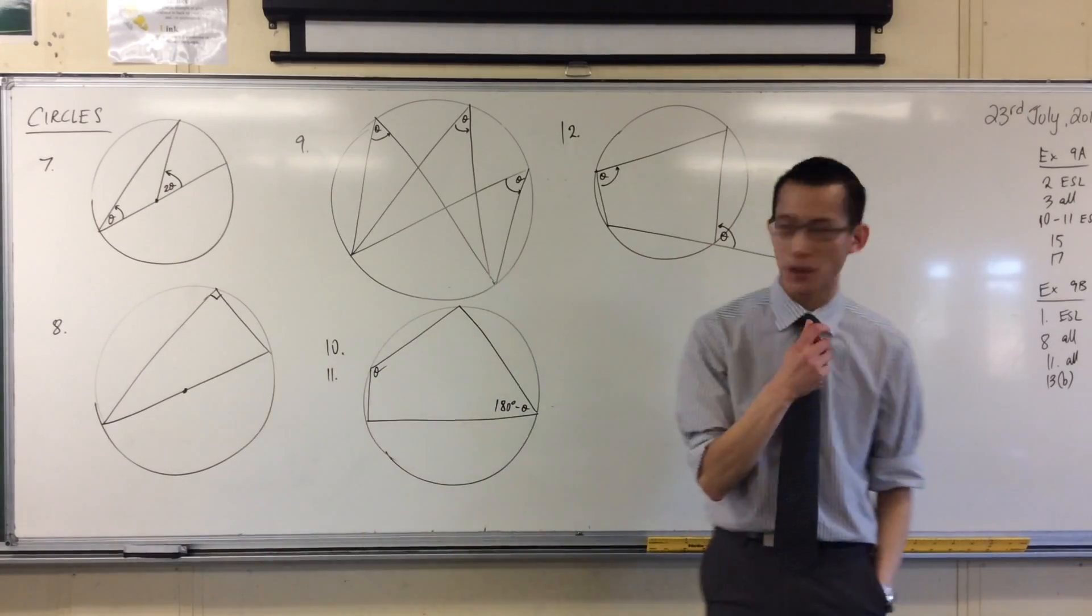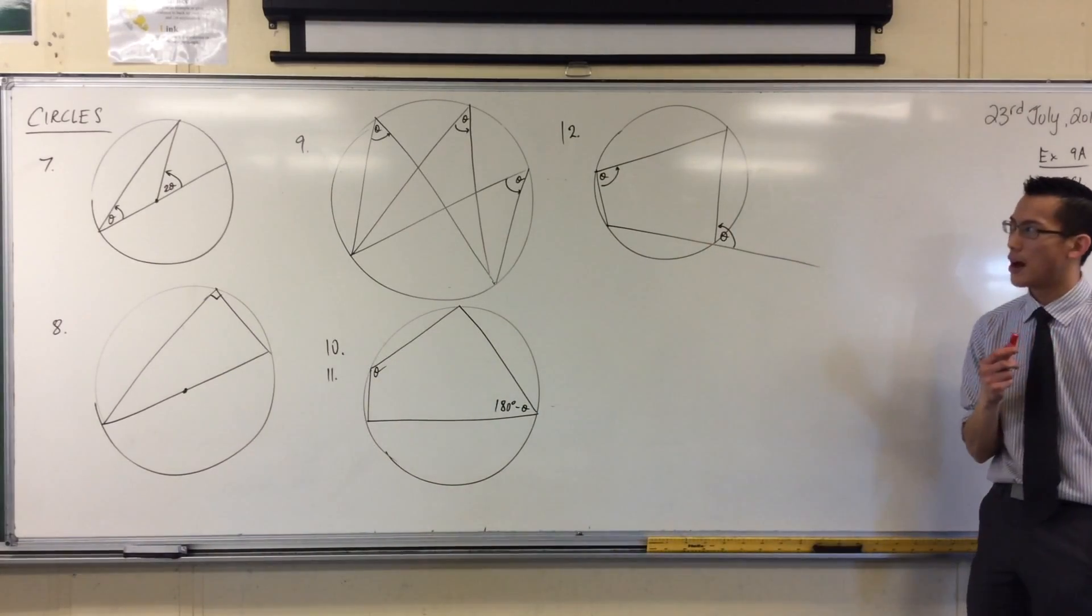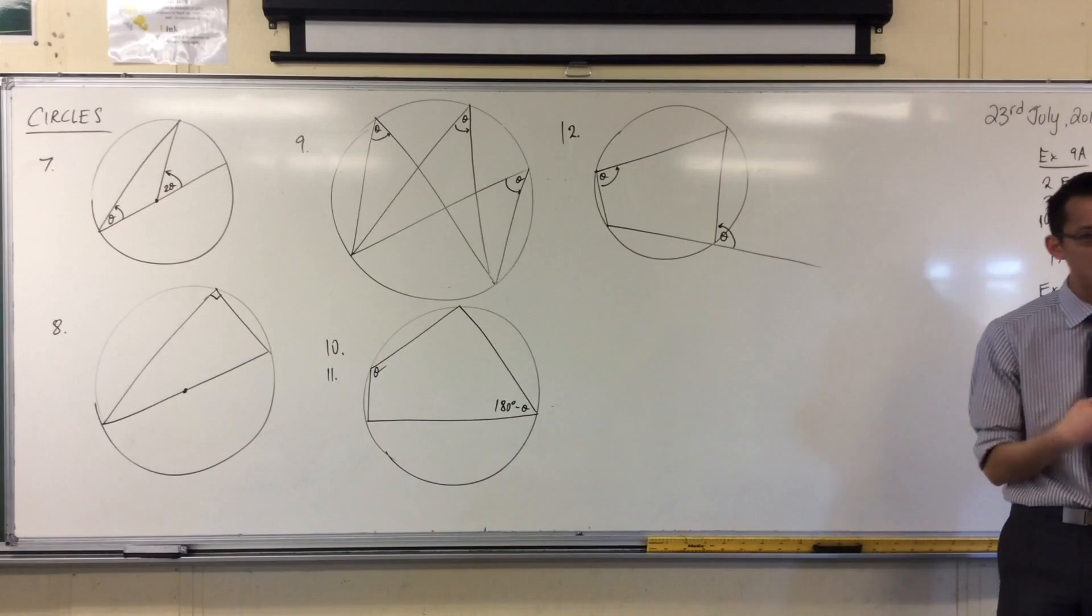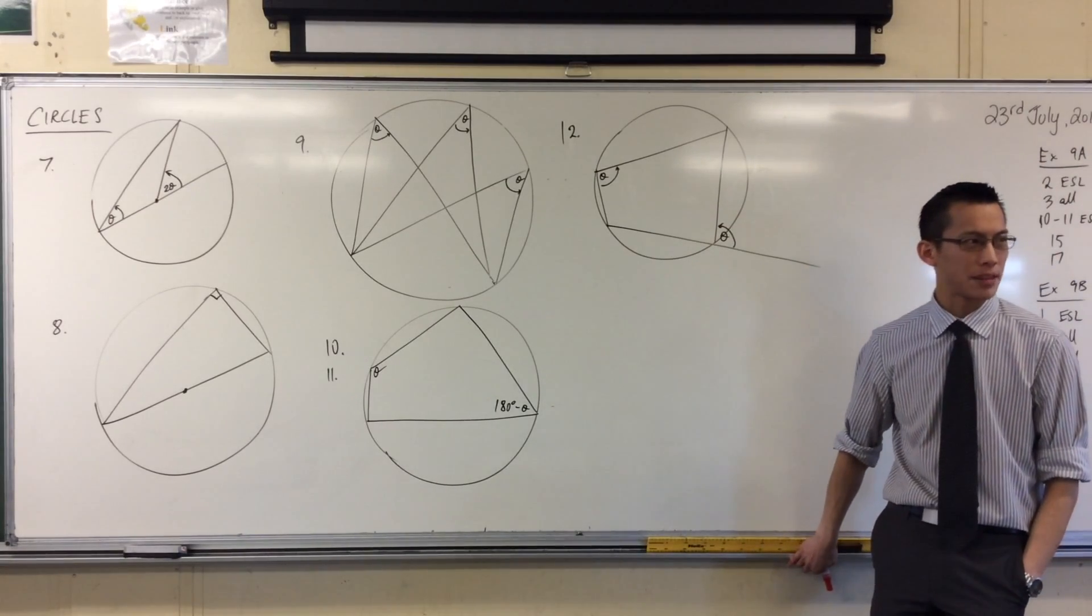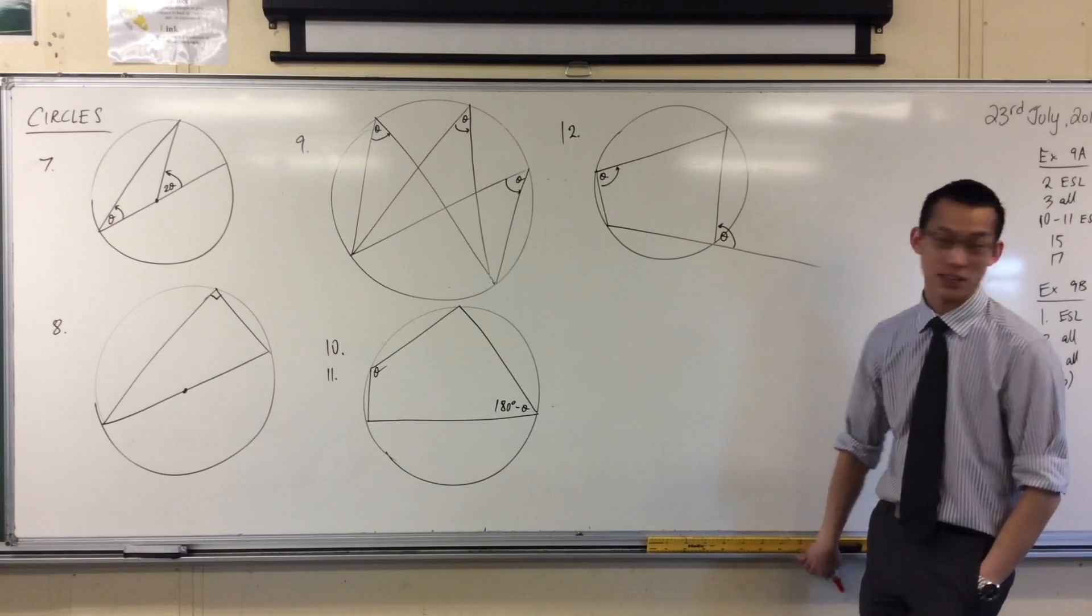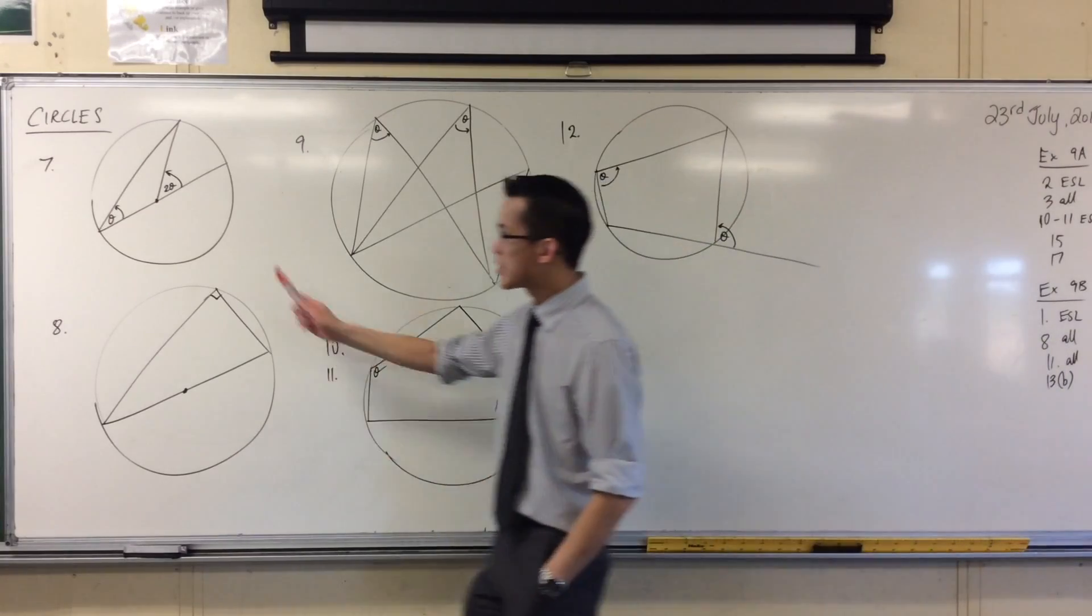I'm just going to run you through a handful of the proofs and how I'm going to use triangles to prove these. Because some of them are really quite profound, but they make quite easy statements. So for example, let's have a look at number 7.